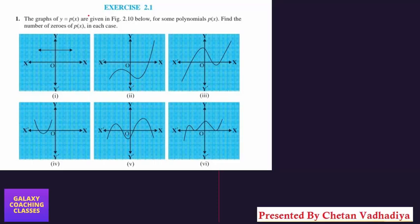Hello friends, my name is Chetan Vadhadiya and today we are going to solve CBSE Class 10 Maths Exercise 2.1, Chapter 2 Polynomials, Question 1. The graphs of y equals p(x) are given in Figure 2.10 below for some polynomials. Find the number of zeros of p(x) in each case.